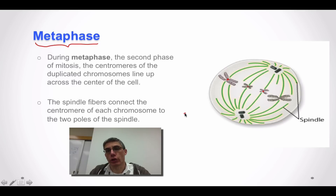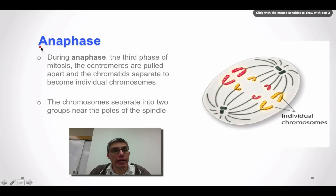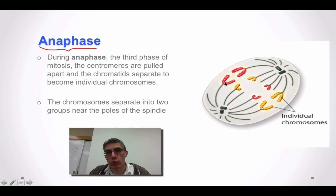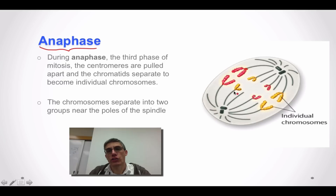Metaphase is also considered one of the shortest phases in the mitotic phase of the cell cycle. The third phase of mitosis is called anaphase. In anaphase, the centromeres which originally connected the identical chromosomes to each other have been separated. The spindle fibers connected to the centromere and centrioles on opposite sides of the cell work to pull those identical chromosomes apart, so individual chromosomes are now being pulled to the opposite poles of the cell.